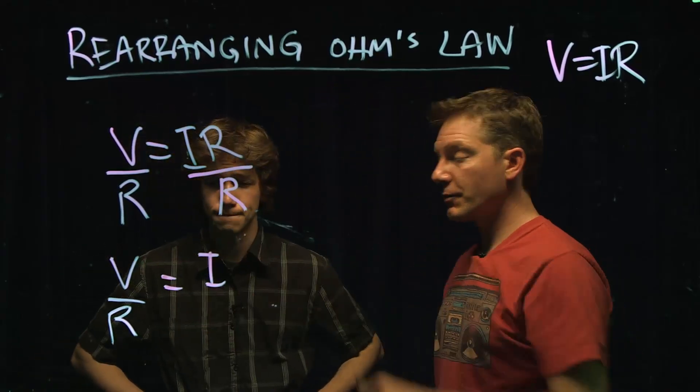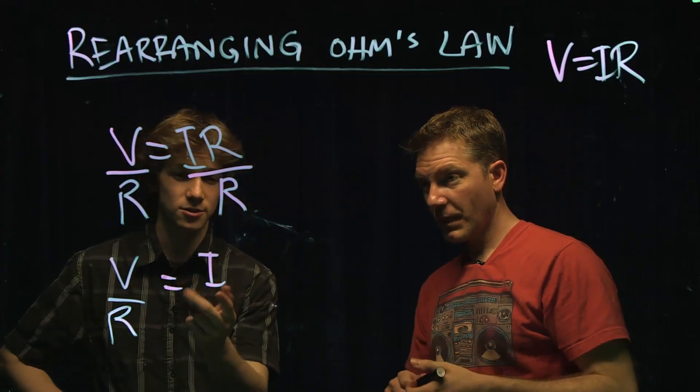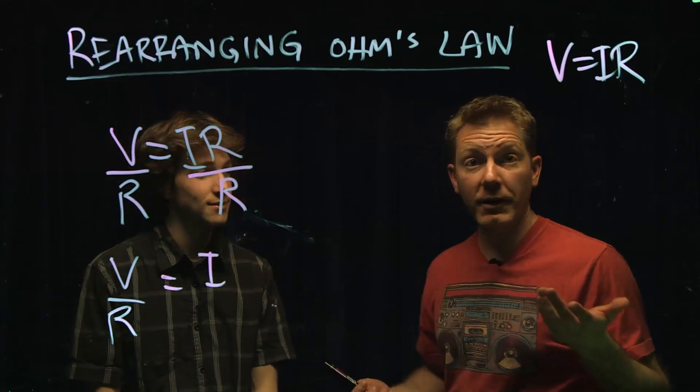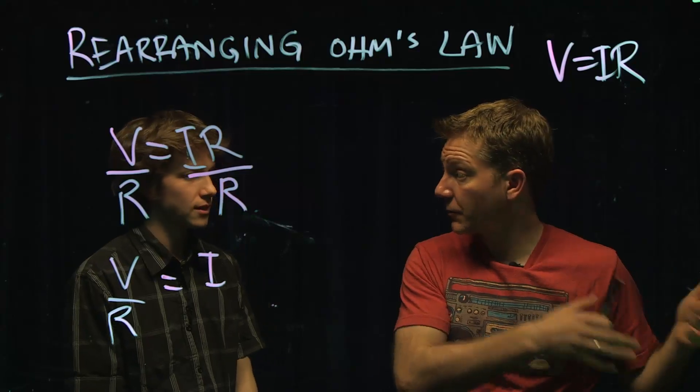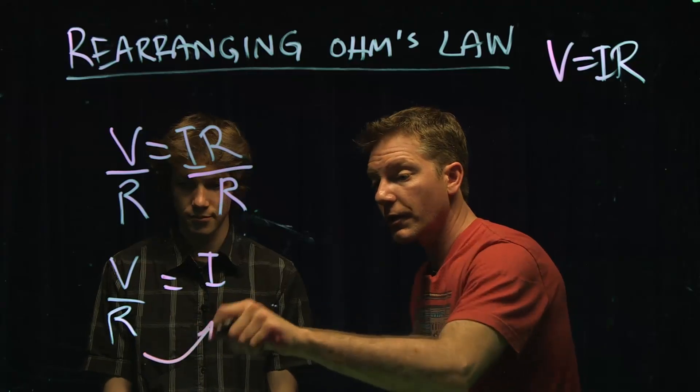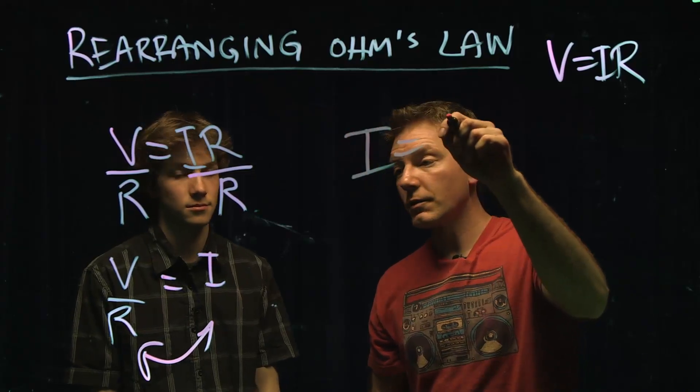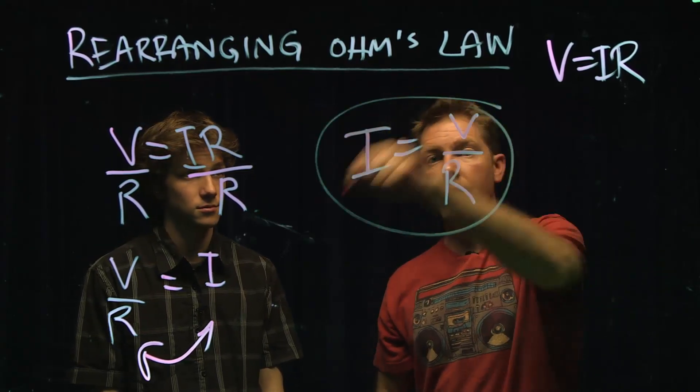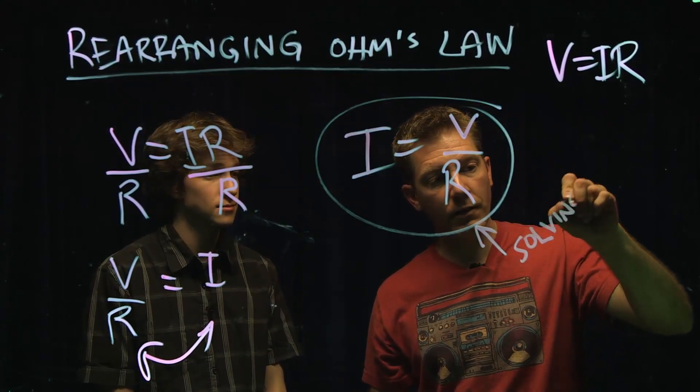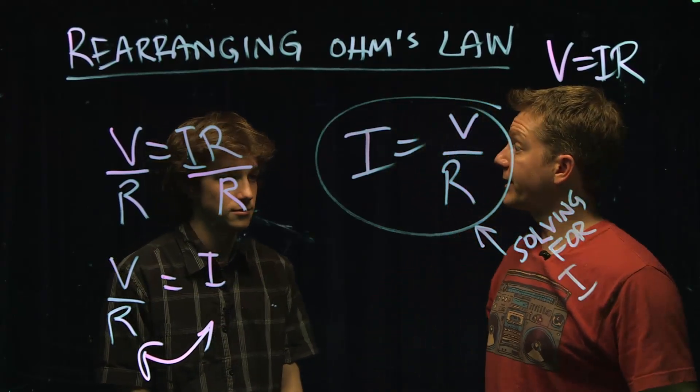So now we have V over R equals I. We done? Yeah. Oh, almost. The only other thing is that we'd rather switch them so that I is actually on the left-hand side. I like to put the stuff you don't know on the left side and what you do know on the right side. So we just switch them around. We're allowed to do that because that's equal to that. So we rearrange it. I equals V over R and that is called solving for I or solving for current. That's how it's done. Perfect.